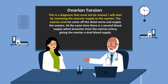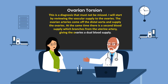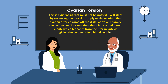The ovarian arteries come off the distal aorta and supply the ovaries. At the same time, there is a second blood supply which branches from the uterine artery, giving the ovaries a dual blood supply.